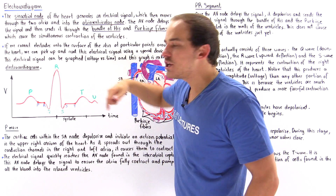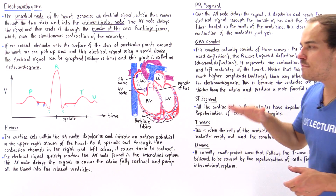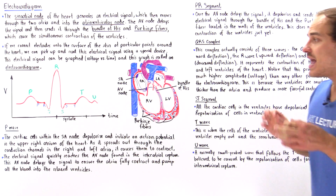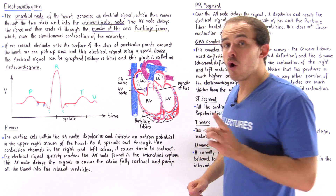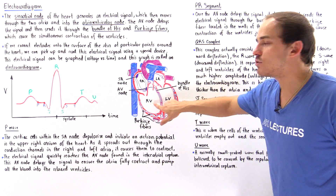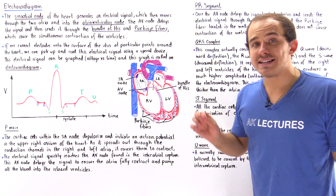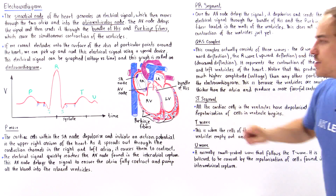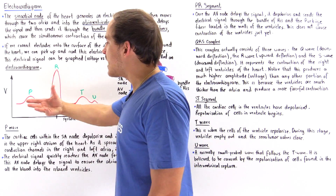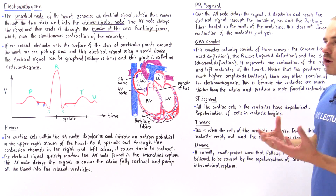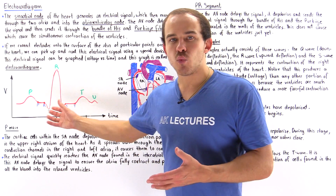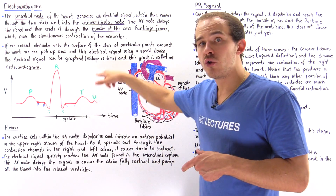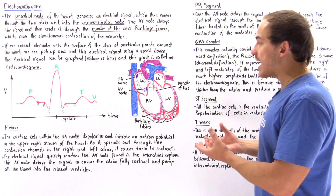The U wave is usually a very small peaked wave following the T wave. It is believed to describe the repolarization of all the cells found within the interventricular wall — the wall separating the two ventricles. These are the main segments and waves found on a normal electrocardiogram, describing the propagation of the electrical signal as voltage changes, ultimately creating the contraction of the heart.